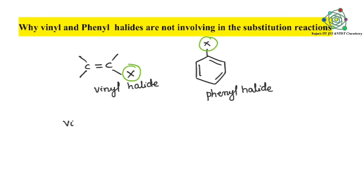So everyone knows very well about SN1 reaction means cation should be formed. Here vinyl and phenyl cations are highly unstable. So highly unstable.